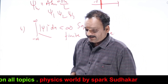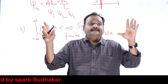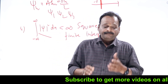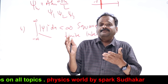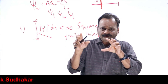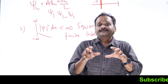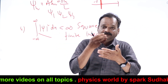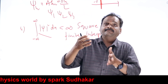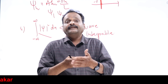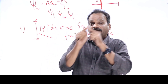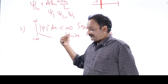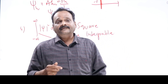So these are the four properties of wave functions. Mathematical functions like tan x, cot x, sec x, cosec x, etc. are not suitable as wave functions in quantum mechanics. Sine x and cos x are acceptable. In examinations, questions may ask which function is suitable as a wave function — you should check whether it is single-valued, finite, continuous, and square integrable. These are the four properties of the wave function. Thank you.